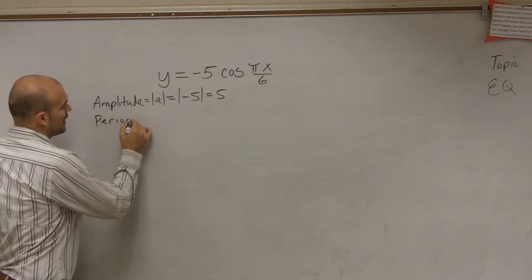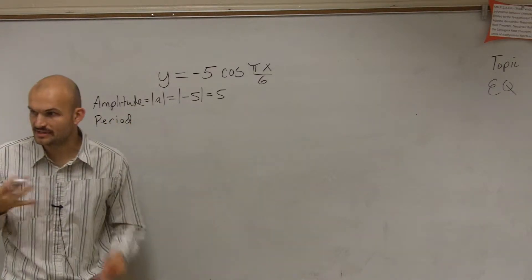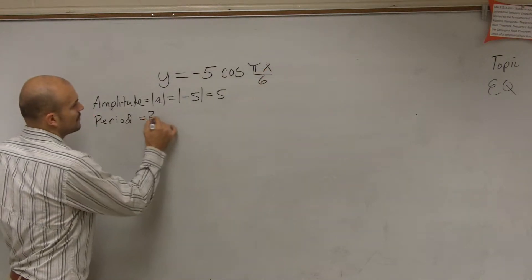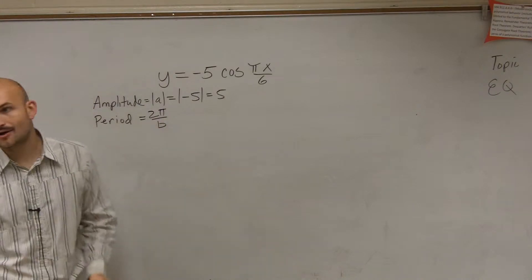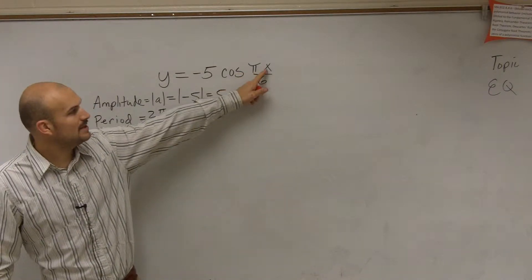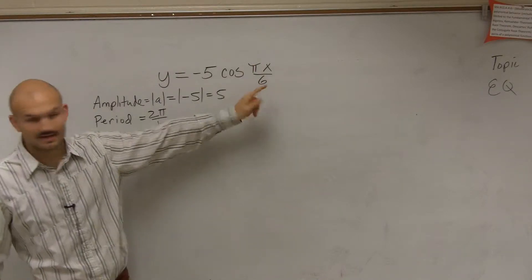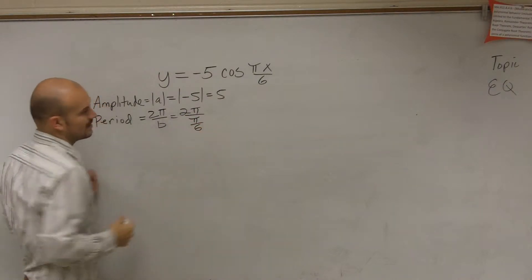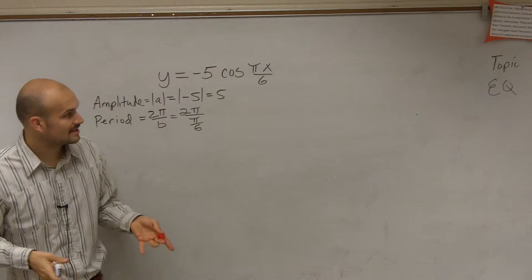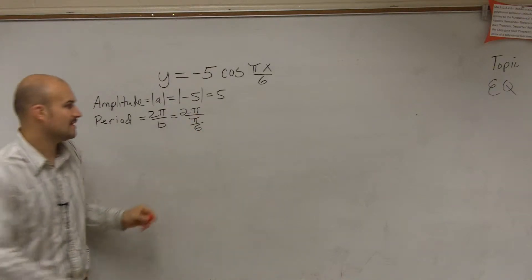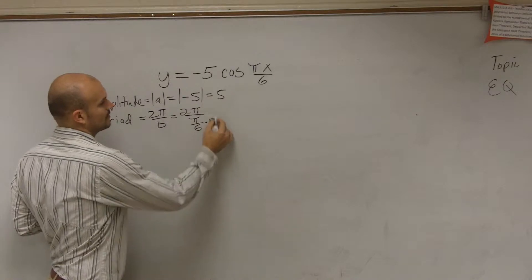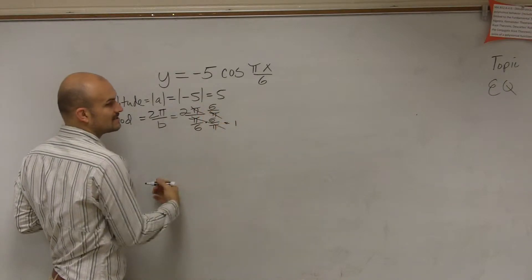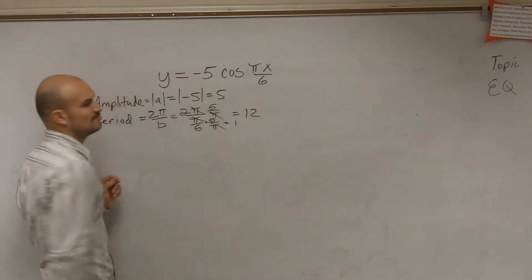Then let's determine the period. I think some of you got a little bit of a taste of how the period can sometimes get confusing because, remember, the period is 2 pi divided by b. Now, b is not always going to be a simple number. If you look here, my b is going to be pi divided by 6. So, therefore, it looks something like this: 2 pi divided by pi divided by 6. To simplify this, I multiply by the reciprocal, and my pi's divide to 1, and I'm left with a period of 12.